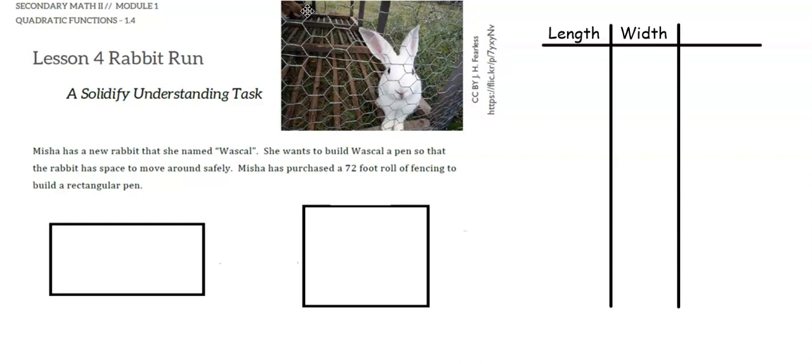We're looking at our perimeter being 72 feet. Remember, perimeter for a rectangle is 2 times the length plus 2 times the width. So if I were to make the length 24, then the width would have to be 12.